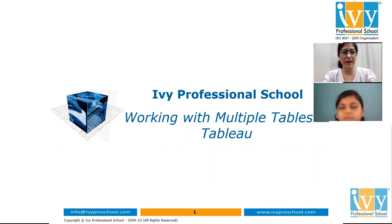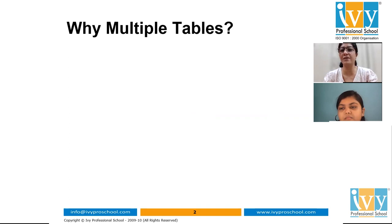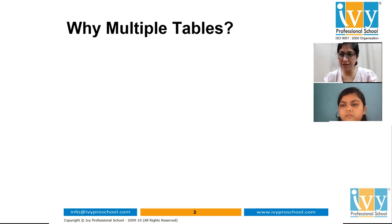Why do we have so many databases? Why can't we just have one table? With the growing amount of data and the many ways of storing it, the first problem is that we have databases in a lot of formats. Second, we try to avoid putting all our information in one single database because of data redundancy and potential security breaches.